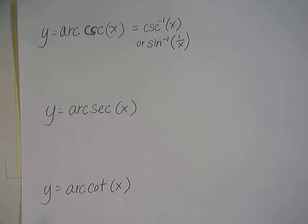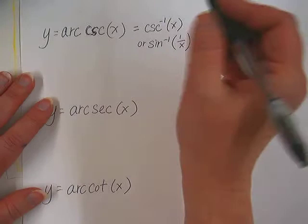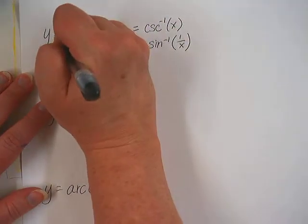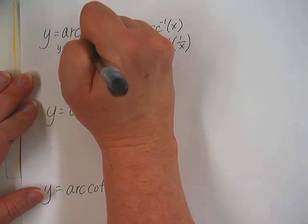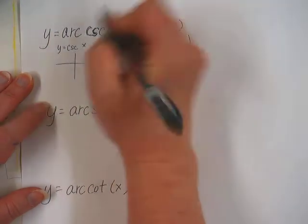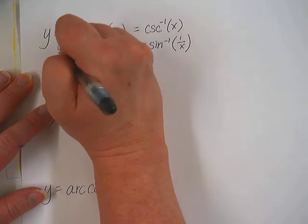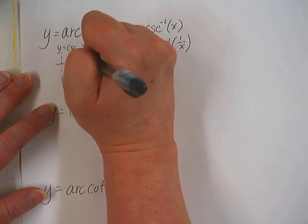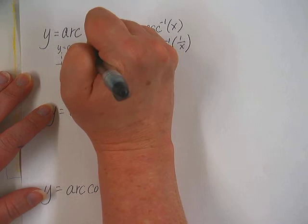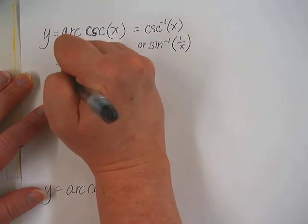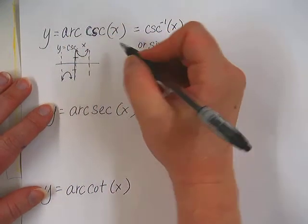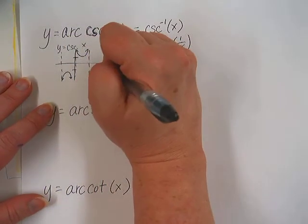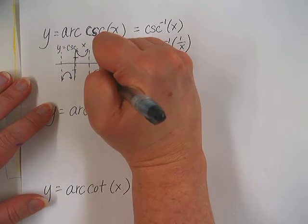All right, so for arc cosecant. Remember that the cosecant graph has an asymptote here and here and here. And it has like these little parabolas that don't go lower than positive 1 at the top and no higher than negative 1 at the bottom. So something like this.